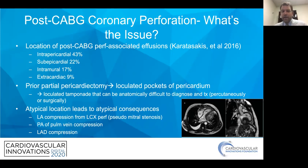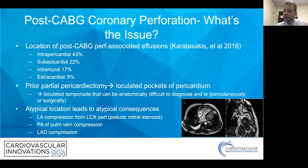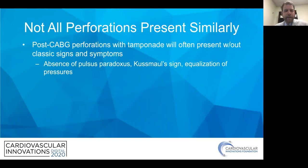You can get everything from LA compression, circumflex perforation — which we really worry about because that's where that loculated pericardium is — to compression of the PA, pulmonary vein, and LAD. This more often occurs with circumflex perforations where you get tamponade. You've got to be vigilant with echo, looking for LA compression and increased velocities across the mitral valve, getting a pseudo-stenosis from loculated tamponade.